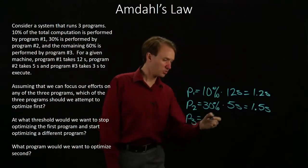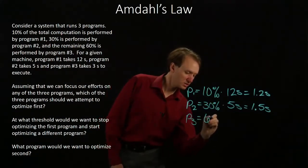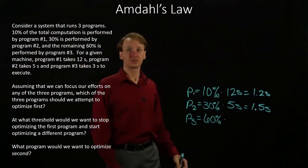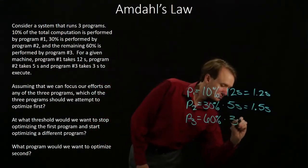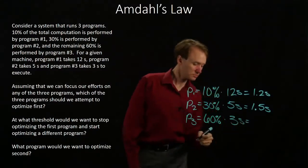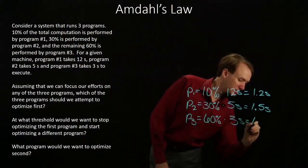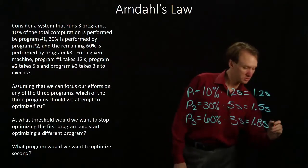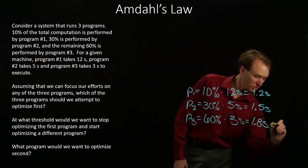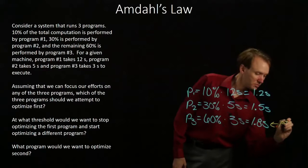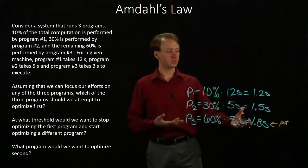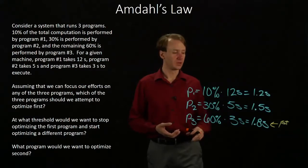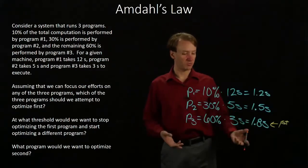Program 3 takes the remaining 60% of my computation, and that takes 3 seconds to run. So that will give me 1.8 seconds on average. So this time Program 3 is the most expensive — it's consuming more of my time on average than any of the other programs. So I would want to optimize Program 3 first.